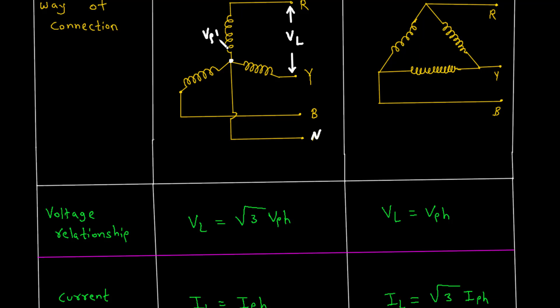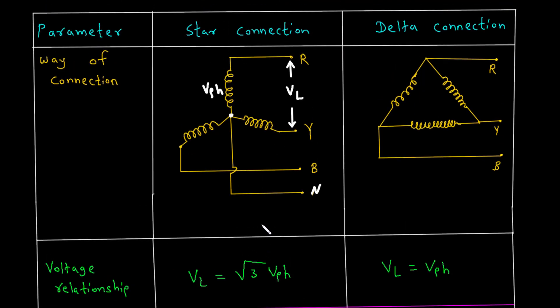This relationship occurs because the line voltage is the vector sum of two phase voltages in a star configuration.